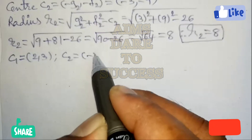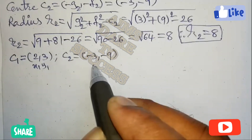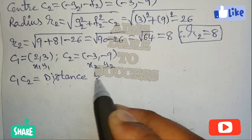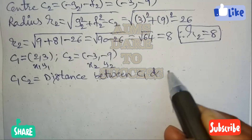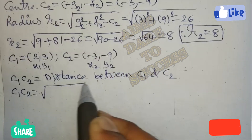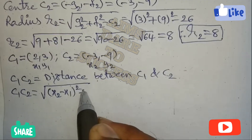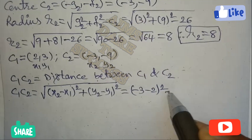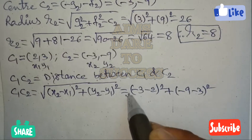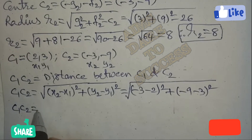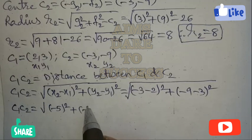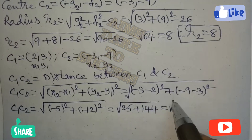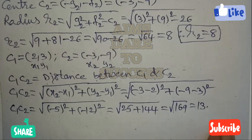Center C₁ = (2, 3) is (x₁, y₁) and center C₂ = (-3, -9) is (x₂, y₂). The distance between two centers: C₁C₂ = √((x₂-x₁)² + (y₂-y₁)²) = √((-3-2)² + (-9-3)²) = √((-5)² + (-12)²) = √(25 + 144) = √169 = 13.